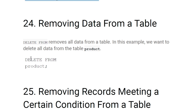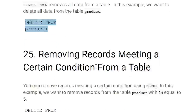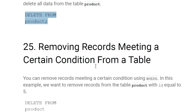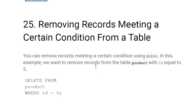Removing data from a table: to remove all data from a table use DELETE FROM followed by the table name. For example, DELETE FROM product removes all records from the product table.